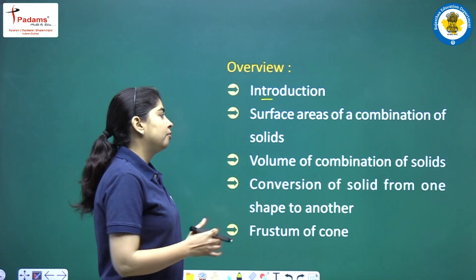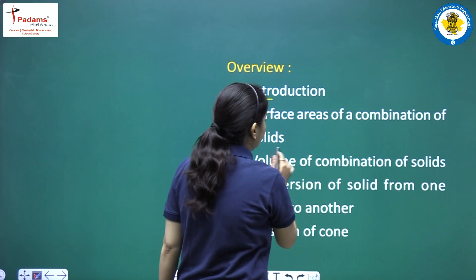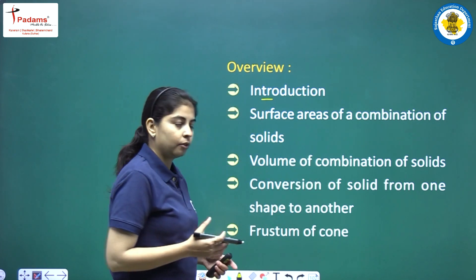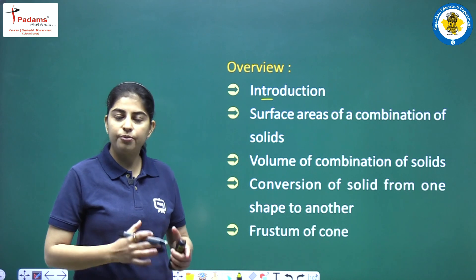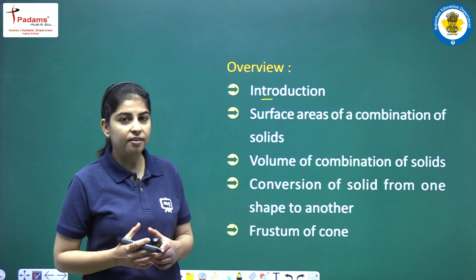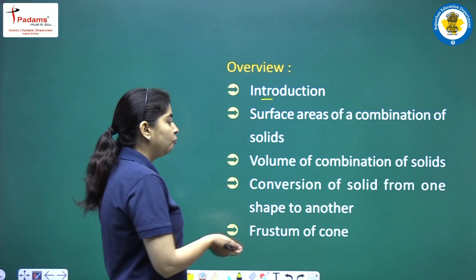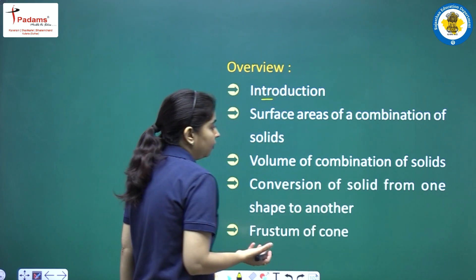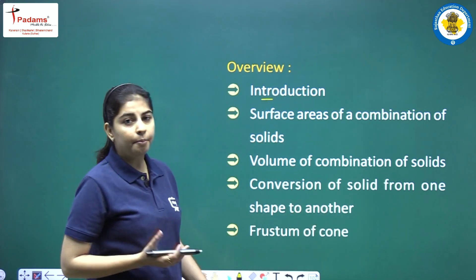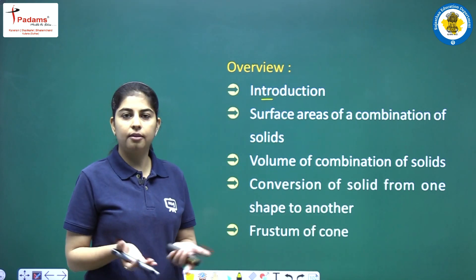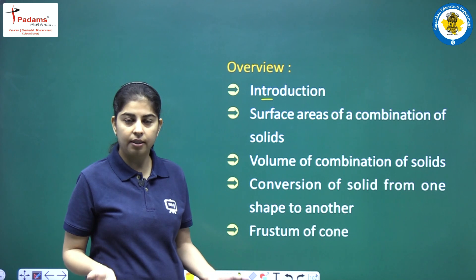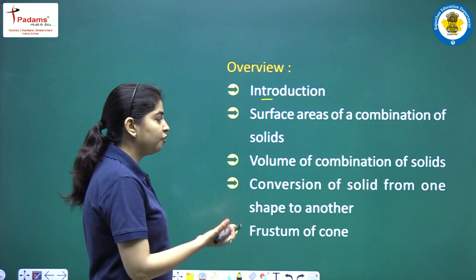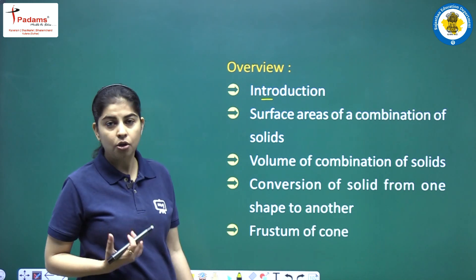Then we will study surface areas of a combination of solids — when we combine two or more solid objects, what is the resulting surface area? Next, volume of combination of solids — when we combine different 3D solid objects, what is the resulting volume of the object we get after combination?